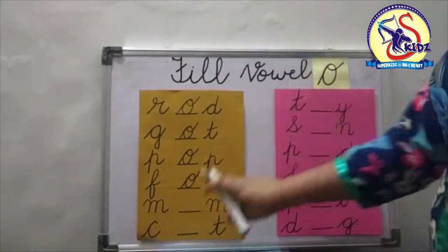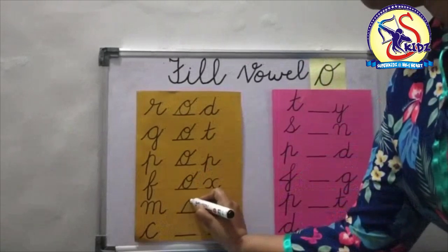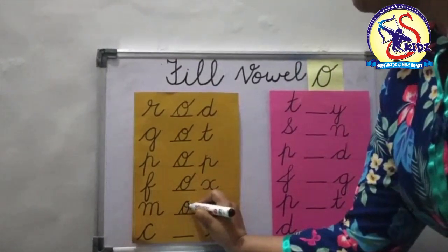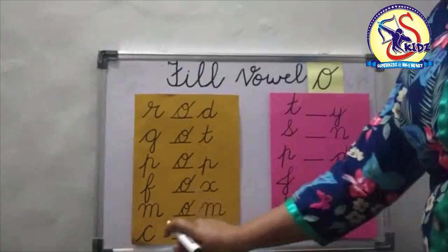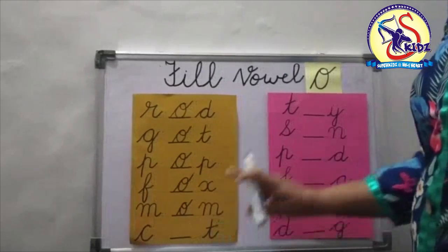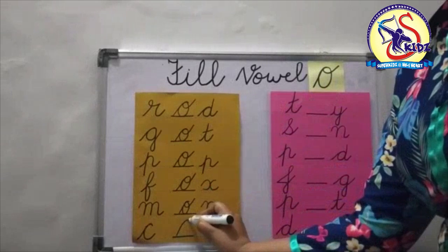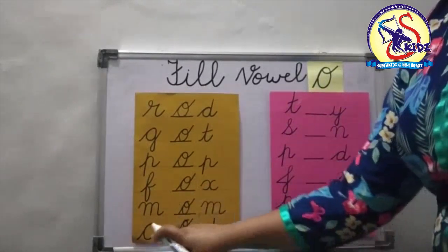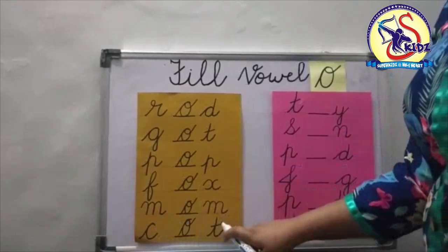Now M blank N. Again we will put O in the blank. M-O-M, mom. Now C blank T. Again we will put O in the blank. Now C-O-T, cot.